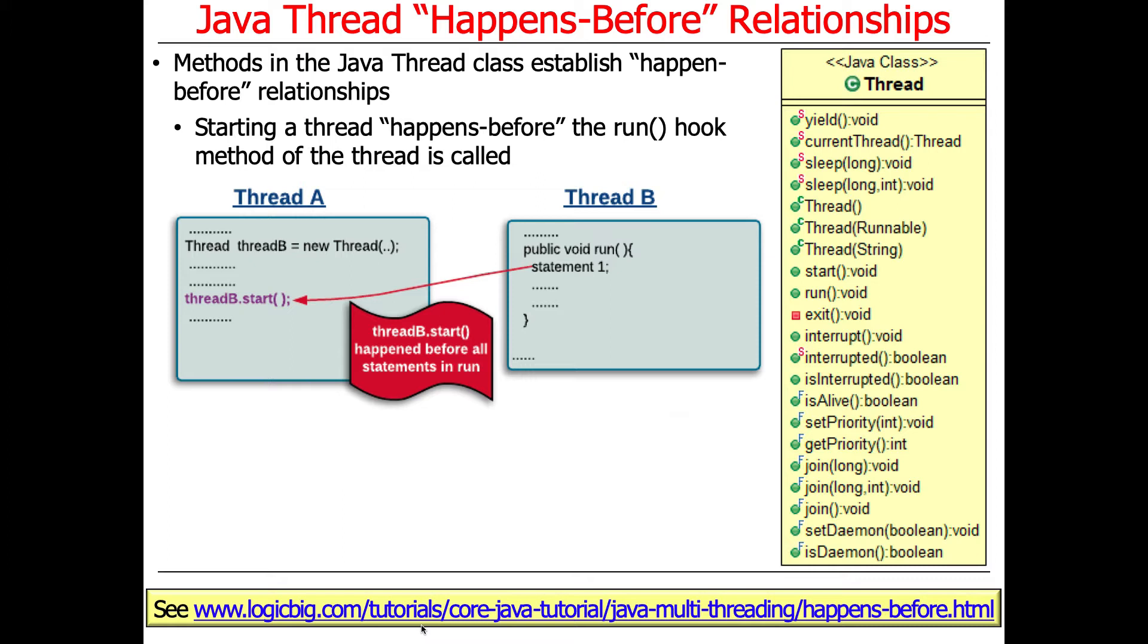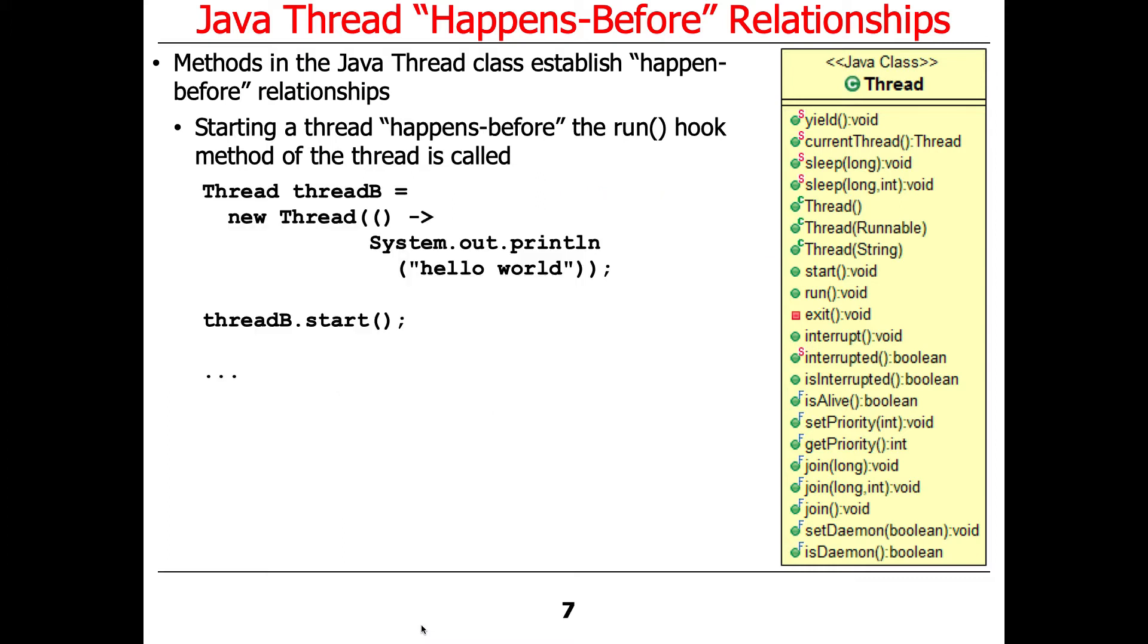Otherwise, chaos and insanity would break out, right? If you started a thread, the thread hadn't been fully initialized, the thread object had not been fully initialized, and its run method starts to run, you'd be in big trouble because it wouldn't be properly initialized. So that's one of the places where a happens-before relationship occurs.